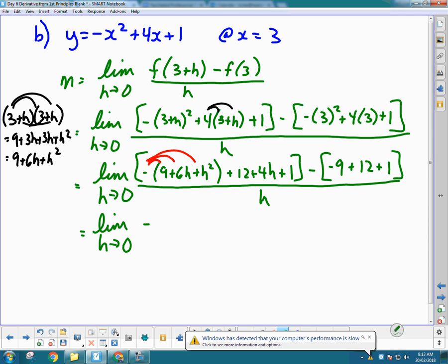It means a lot more writing, and that's okay with me. So this becomes negative 9 minus 6h minus h squared plus a 12 plus a 4h plus a 1. This is all in this big square bracket.